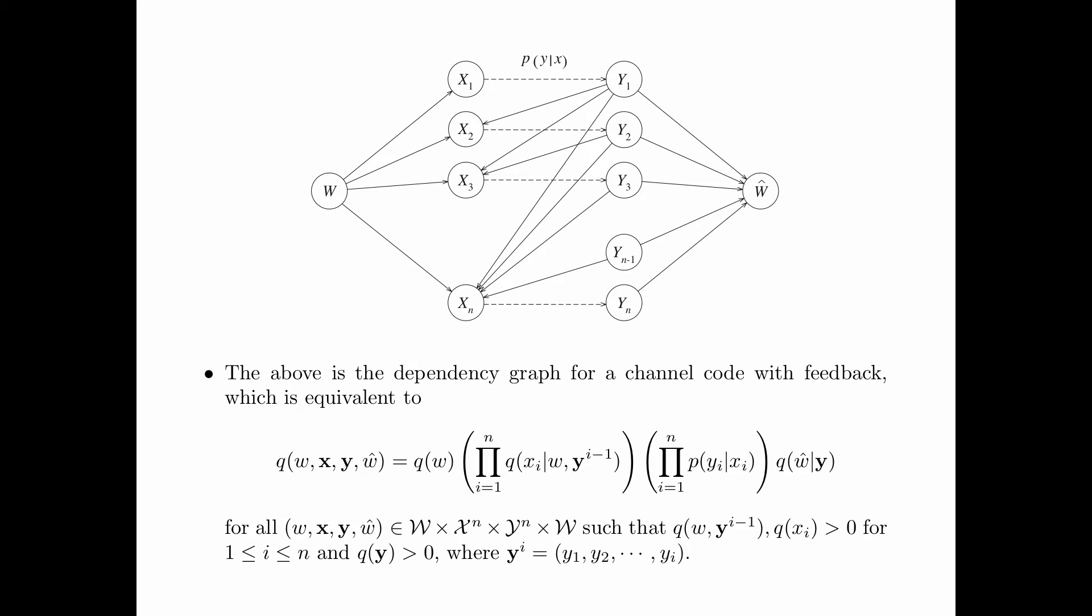This is the dependency graph for a channel code with feedback, which is equivalent to the factorization Q(W,X,Y,W_hat) equals Q(W) times the product from i equals 1 up to n of P(Y_i|X_i) times Q(W_hat|Y), where this factorization is valid whenever the conditional events have nonzero probabilities.